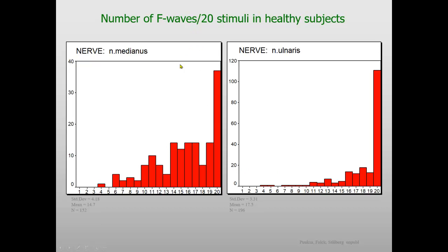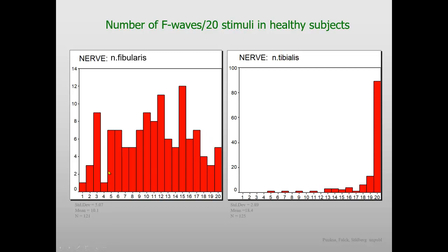The number of F-waves per 20 stimuli varies very much between nerves because of different excitability of the spinal cord. Here is typical data from the median nerve, from 152 subjects. Often in the median nerve we have more than 10 out of 20, but it is difficult to make an exact number. The ulnar nerve is much more prone to give responses, usually above 15. The fibular nerve does not have so many F-responses — even one or two is normal. The tibial nerve gives usually more than 18 traces with F-responses out of 20.